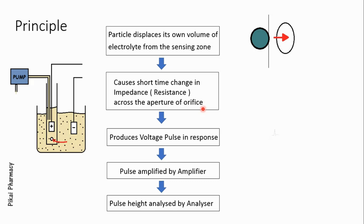Due to this change in resistance, the voltage also changes for a very short period of time as a voltage pulse. This voltage pulse is amplified by the amplifier, and then the pulse heights which are generated are analyzed by the analyzer or pulse processing units.